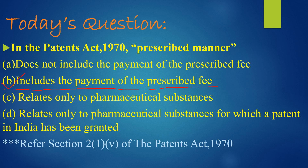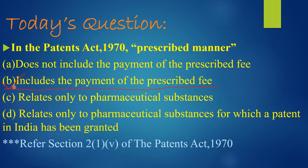Let us read all the options again so that our understanding will be clear. Option A says: does not include the payment of the prescribed fee. Option B: includes the payment of the prescribed fee. Option C: relates only to pharmaceutical substances for which a patent in India has been granted. Friends, when you look at these four options, they may confuse you because 'prescribed manner' is a little word and anything can seem like the answer. But as the question asks specifically about the Patents Act 1970, Option B is the correct one — prescribed manner includes the payment of the prescribed fee.